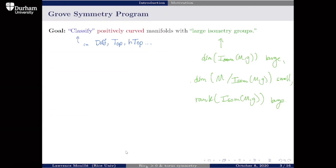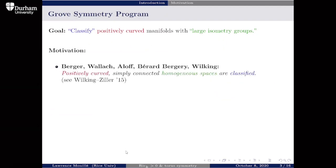Motivation for the Grove symmetry program comes from the classification of positively curved simply connected homogeneous spaces, due to work of many people done in the 70s and 80s. Wilking noticed a gap in Berger's work with one example left out, so he's included in this list. For an overview of this classification, see the 2015 article by Wilking and Ziller.